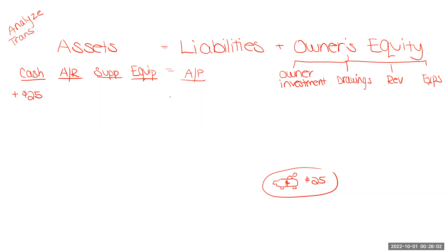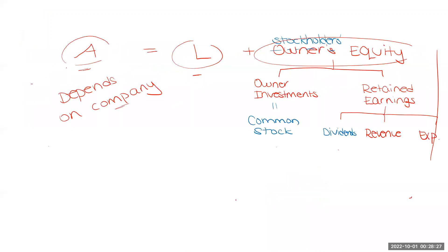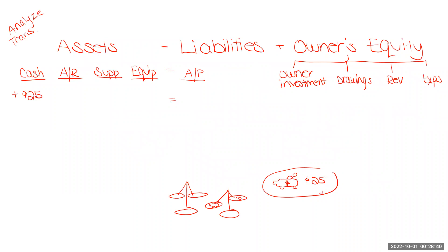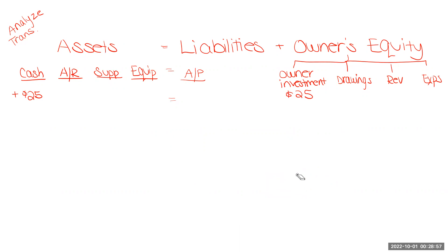Now this equation, just like any equation, says that both sides have to have the same value. You can think of it as one of those old-fashioned scales where both sides have to weigh the exact same amount in order to be in balance. So right now we are definitely not in balance — we have $25 weighing down the scale and nothing on the other side, 25 to zero. Now remember we said that all of the company's assets have a claim against them, either by an external creditor or by the owner. So in this case, that's our money — that was our investment into our company. So we have a claim on that cash, and now both sides of our equation are balanced.